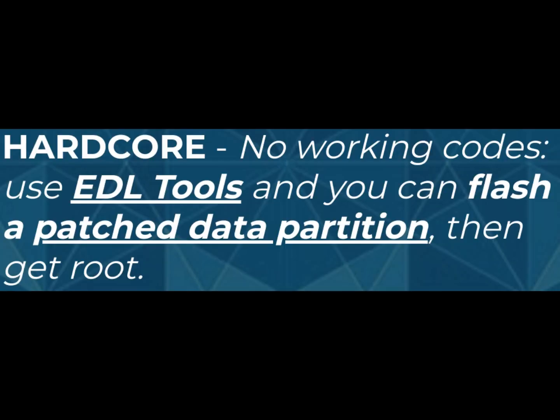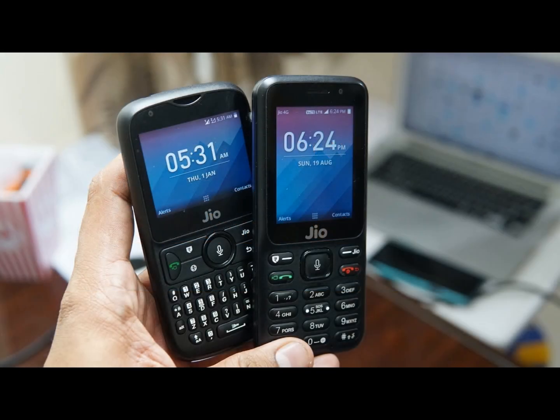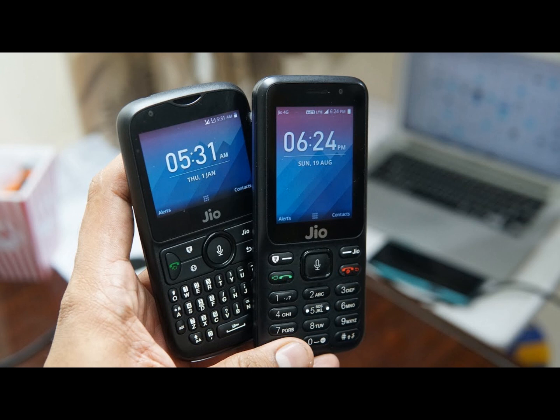Hardcore — no working codes or ADB debugging. You must use EDL tools and flash a patched data partition to get root. Devices currently in this category are JioPhone and JioPhone 2, sold in India, and the Cat B35.